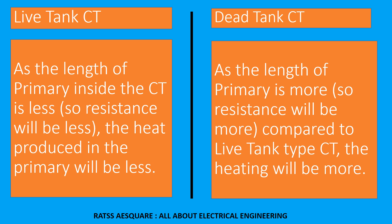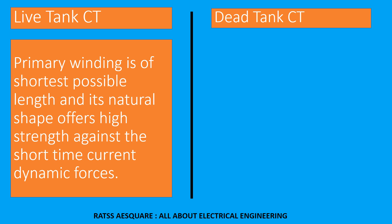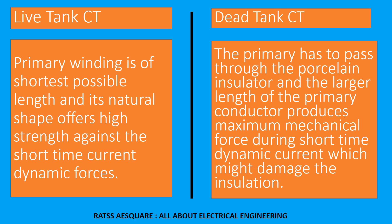In live tank CT, the heating will be more — the primary winding is of the shortest possible length and its natural shape offers high strength against short-time current dynamic forces. In dead tank CT, the primary has to pass through the porcelain insulator, and the larger length of the primary conductor produces maximum mechanical force during short-time dynamic current, which might damage the insulation.